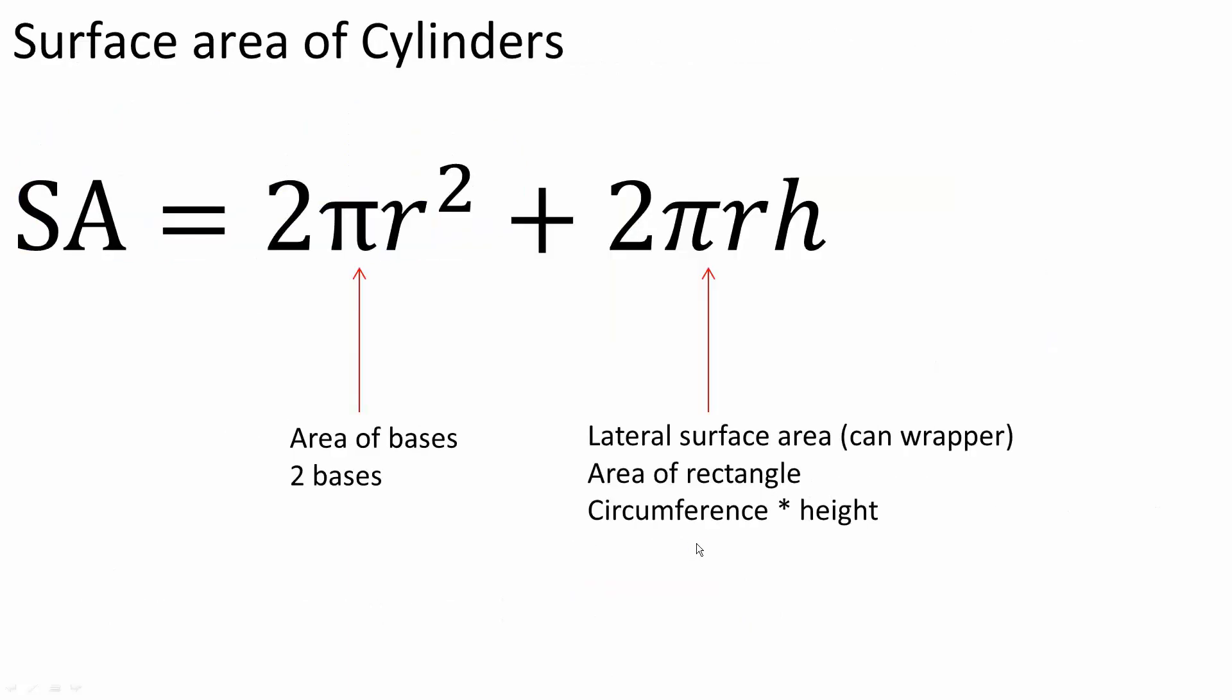Now let's look back at our equation. This was the equation for the surface area of a cylinder. This piece is the base, the top and bottom. That's why we have it 2 times πr². πr² is the area of a circle and we have two, top and bottom.